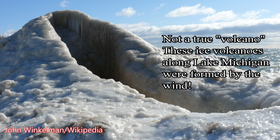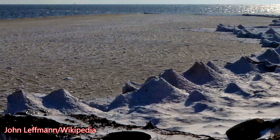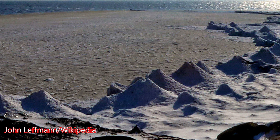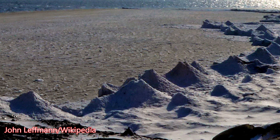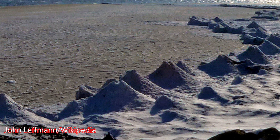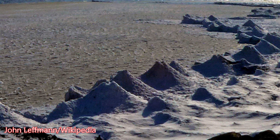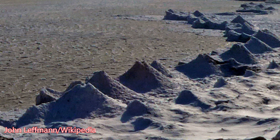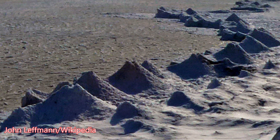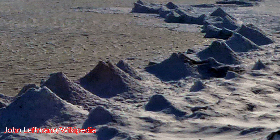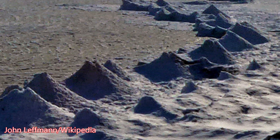There are also ice volcanoes here on Earth, but these are not true volcanoes because they form under completely different circumstances — they require the wind. These structures are normally formed on the shores of large bodies of mainly fresh water, particularly in the Great Lakes region of the United States. As waves crash onto the shore, the water goes into the air, freezes, and falls down forming a cone called an ice volcano — but it is not really a volcano, as volcanoes are formed under completely different conditions.